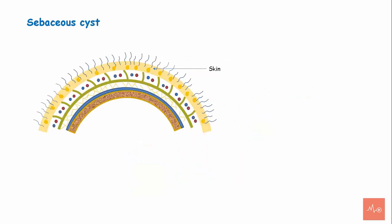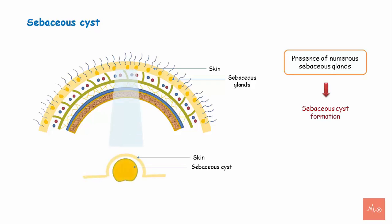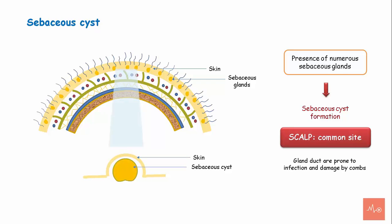Clinical importance of the scalp — Sebaceous cyst formation: The skin of the scalp contains numerous sebaceous glands, making the scalp the most common site for sebaceous cyst formation. The ducts of the sebaceous glands are more prone to infections and damage by combs, which can lead to formation of sebaceous cysts.